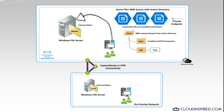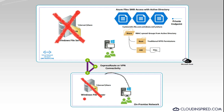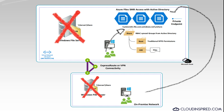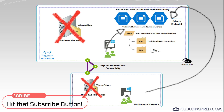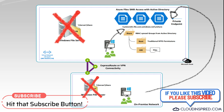In a traditional file server environment, users will connect to Windows file server shares either in the cloud or on-premise. We can replace and decommission these aging Windows file servers with Azure Files in the cloud, which offers a seamless solution hosting our NTFS shares via SMB in the cloud that integrates with Active Directory authentication. Users inside the virtual network can connect to shares, and also any users outside of the virtual network can connect using a private endpoint.